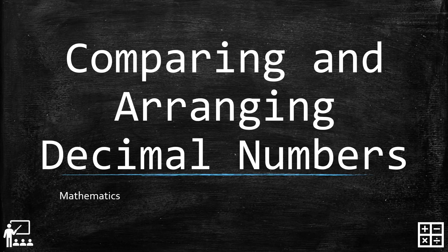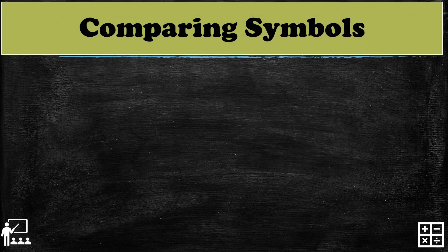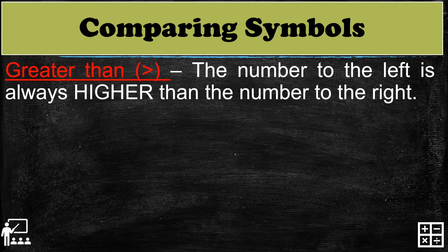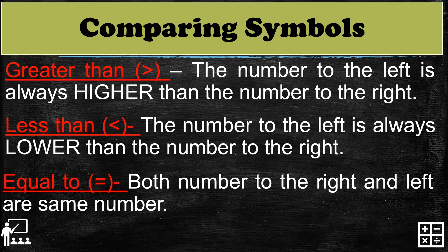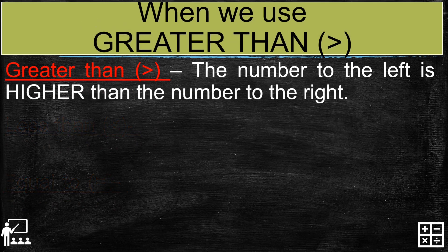This video lesson is about comparing and arranging decimal numbers. Let us know first the comparing symbols. Greater than: the number to the left is always higher than the number to the right. Less than: the number to the left is always lower than the number to the right. And equal to: both numbers to the right and left are the same number.